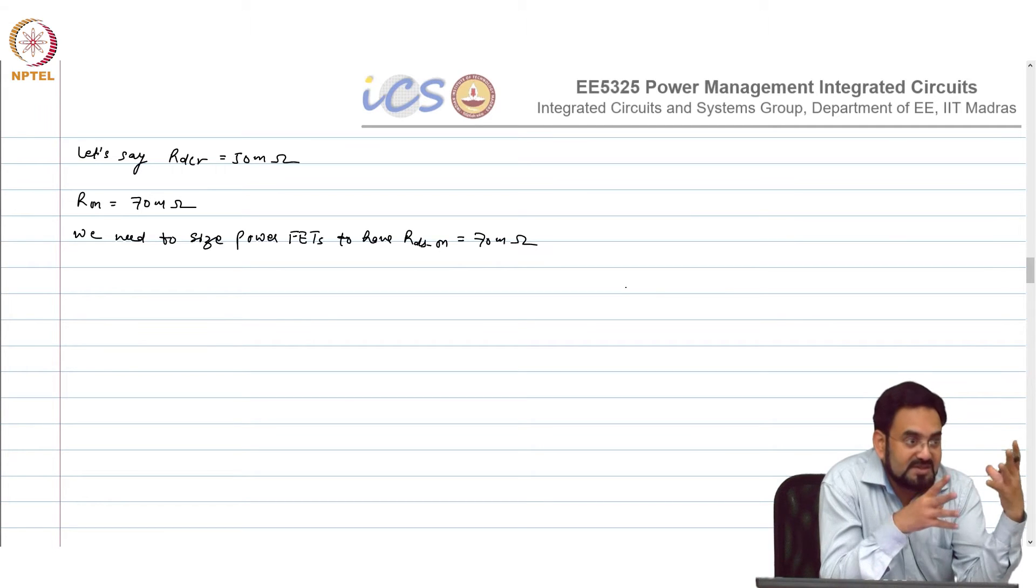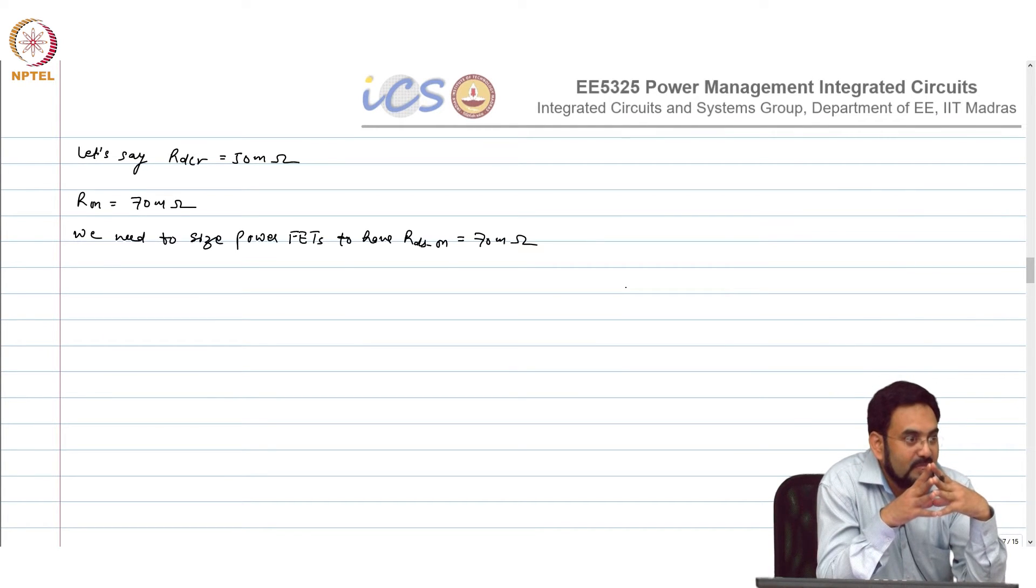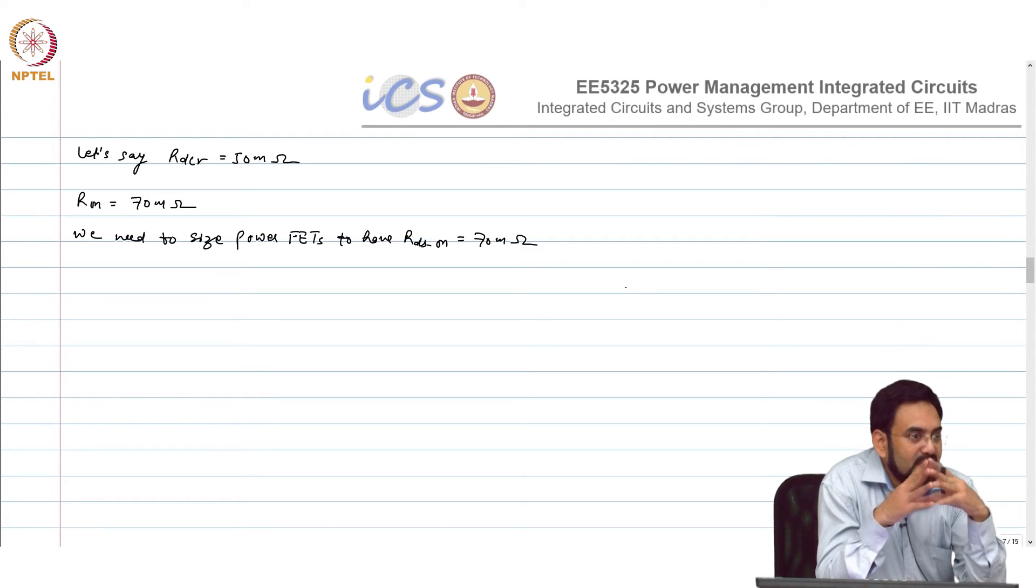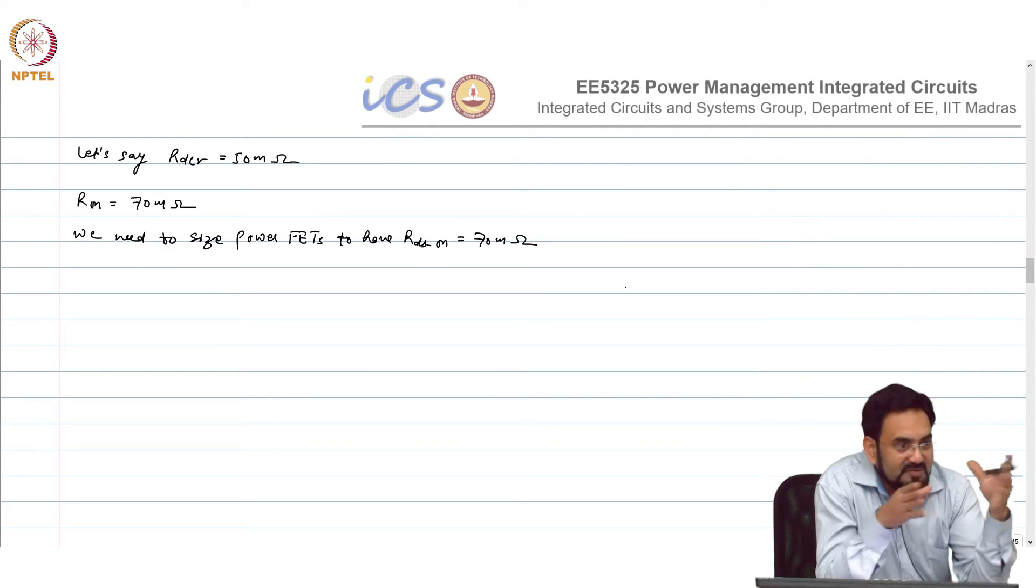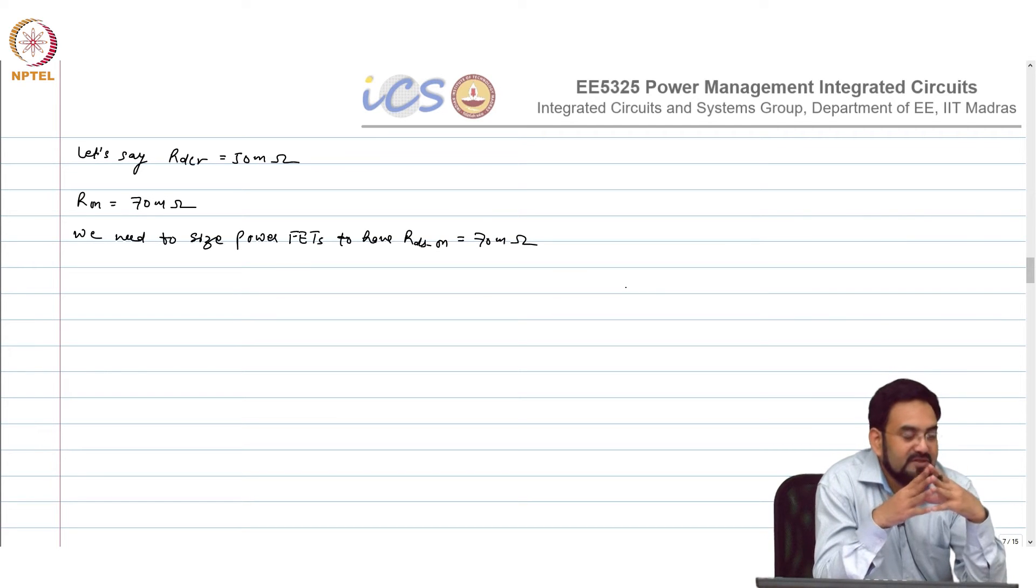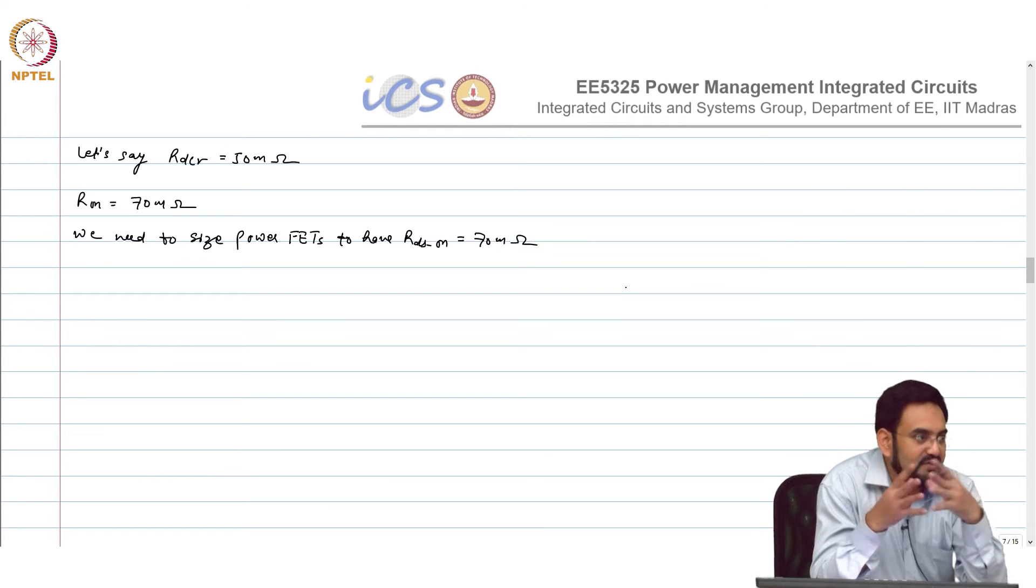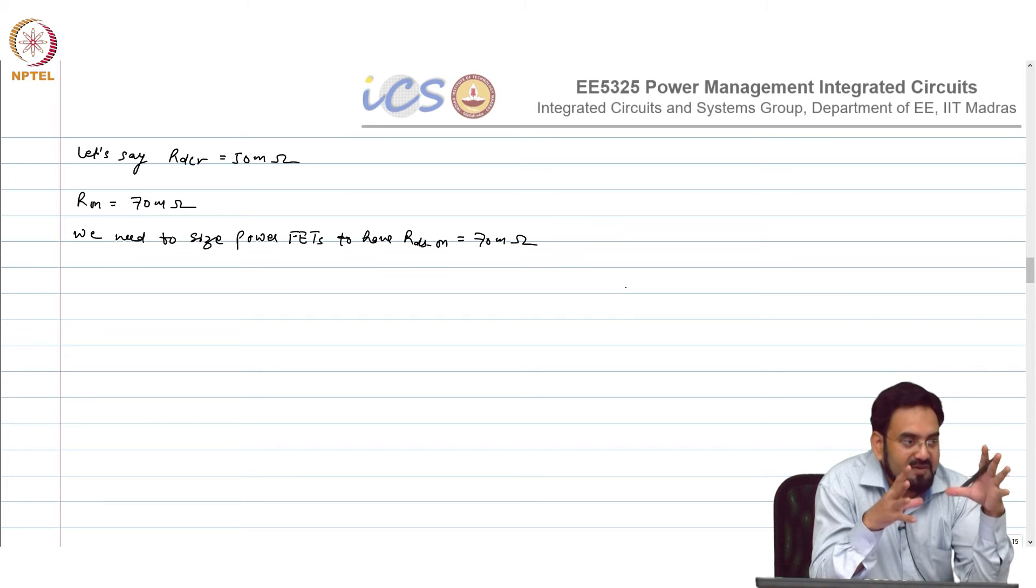If your PMOS is conducting, what are the conditions where PMOS will be conducting for a longer time on average? If your duty cycle is more than 50 percent, then high side FET or PMOS is conducting for longer time compared to NMOS. So if you apply that formula D into R_on plus 1 minus D into R_on, from there you can optimize actually if you know the duty cycle range.